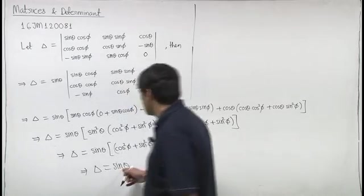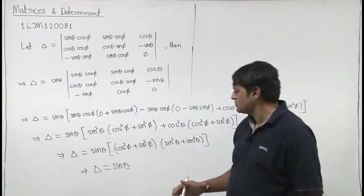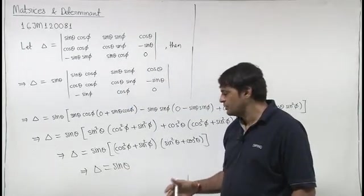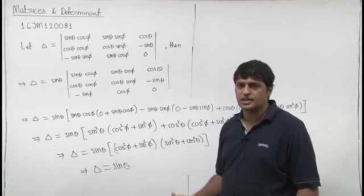That means, delta is independent of phi, b is the correct option.